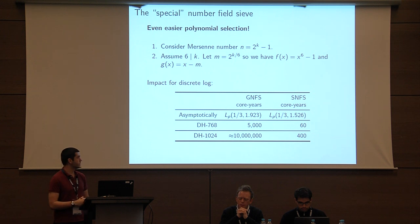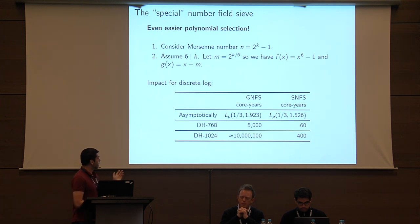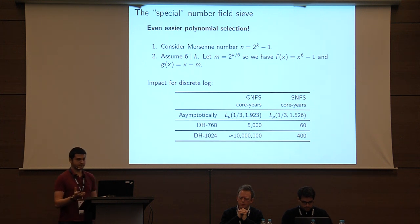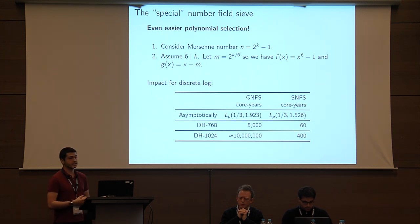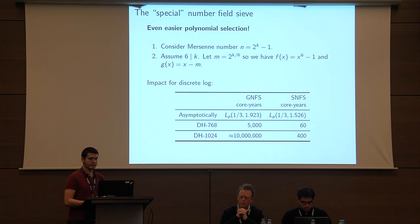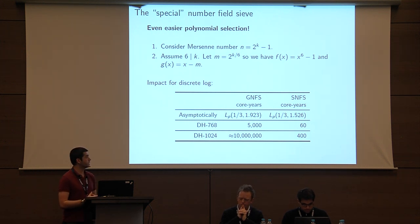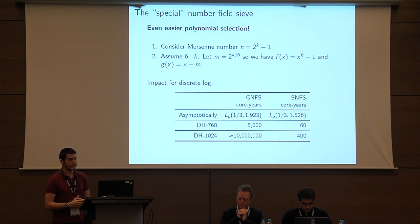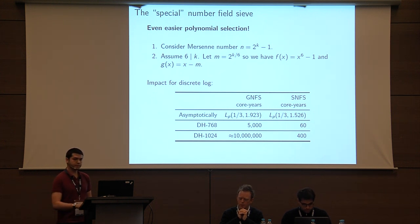In real terms, a discrete logarithm computation for a 768-bit SNFS-applicable prime only takes about 60 core years compared to 5,000. And in the kilobit case, it only takes about 400 core years to run the number field sieve, as opposed to an estimated 10 million core years.